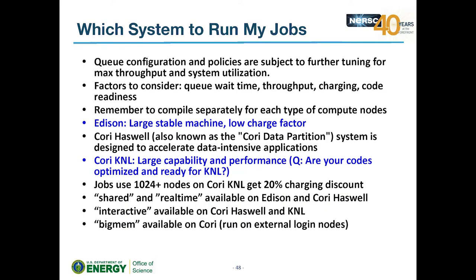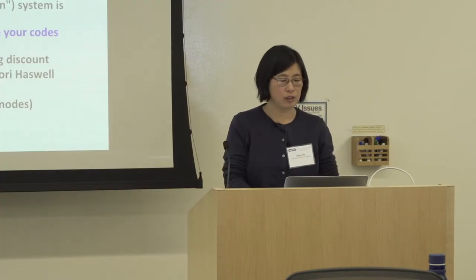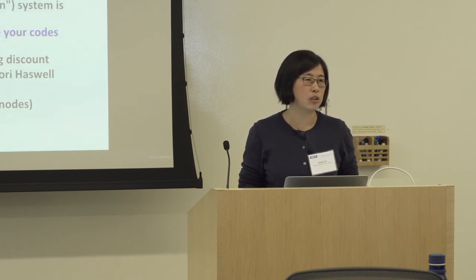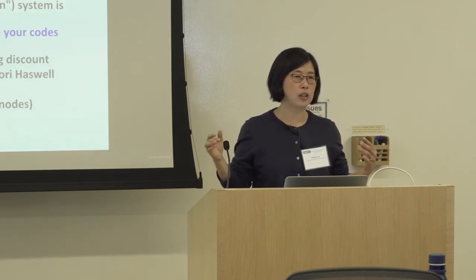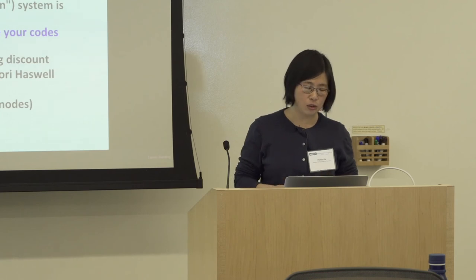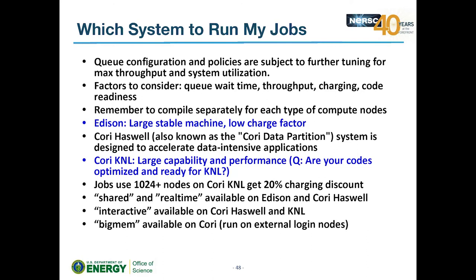When choosing which system to run on, consider queue wait time, throughput cost, and whether your code is ready for KNL. Edison is a large stable machine with a low charge factor. Cori Haswell was designed for data-intensive applications and supports shared and real-time QoS (now also exported to Edison). Cori has large capacity so wait times are relatively low. Interactive and Big Mem jobs are available on Cori only.